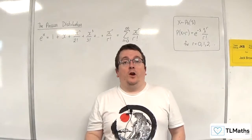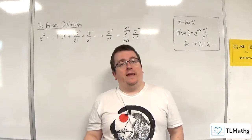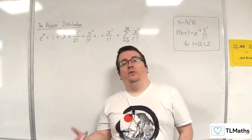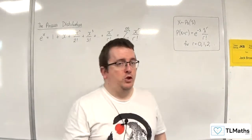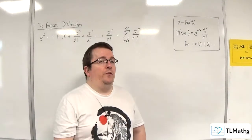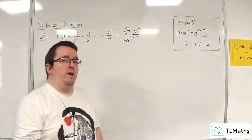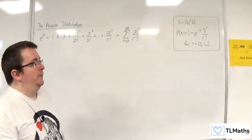In the previous video we derived that E of X is equal to lambda for the Poisson distribution. In this video I want to derive Var of X.